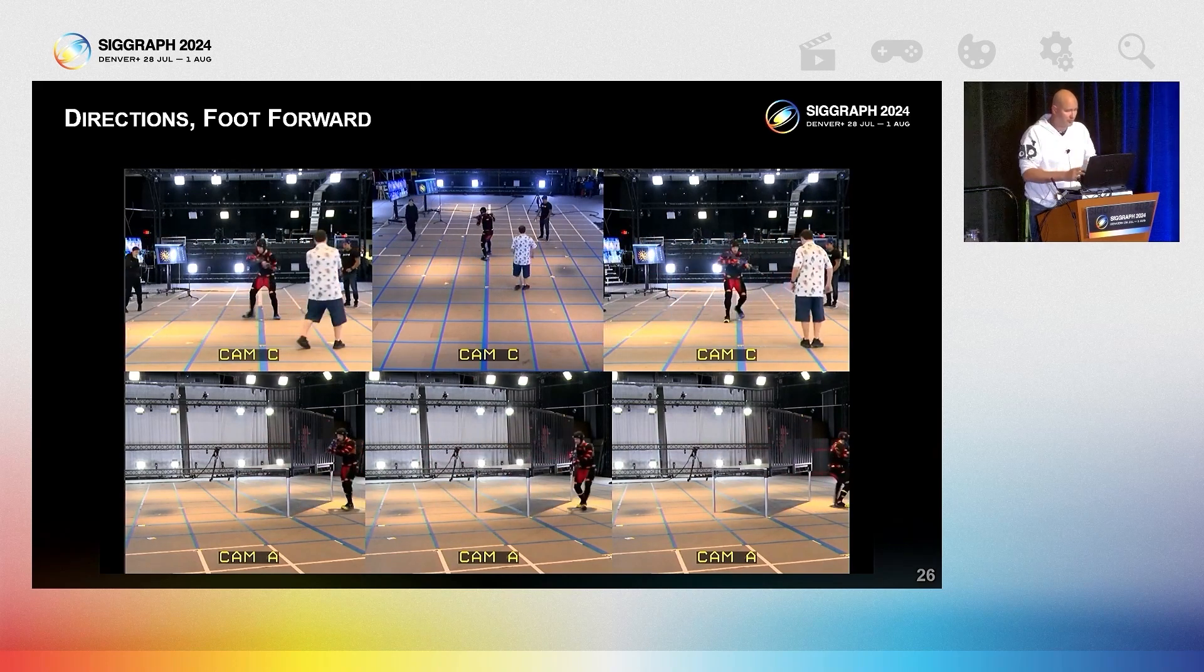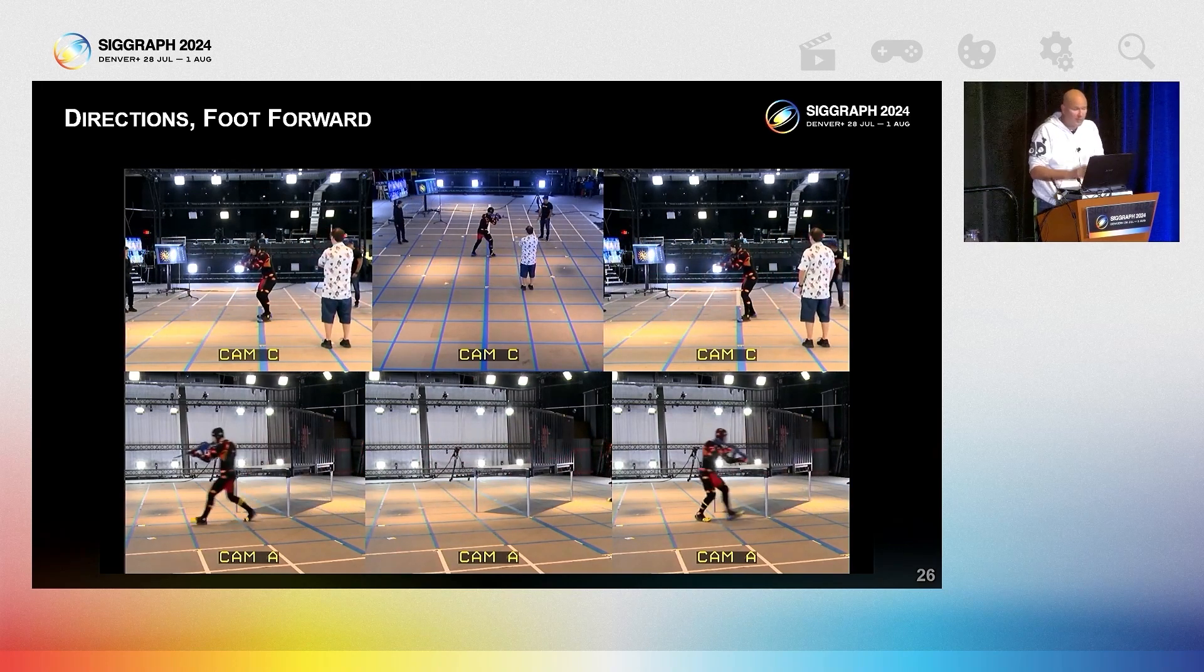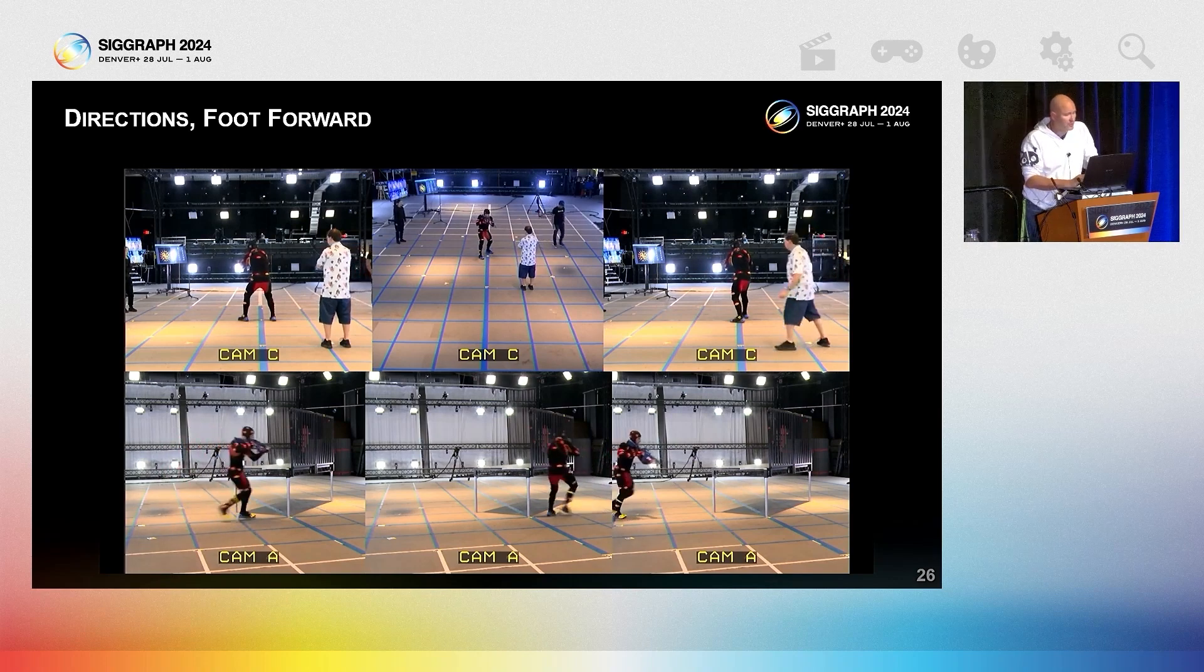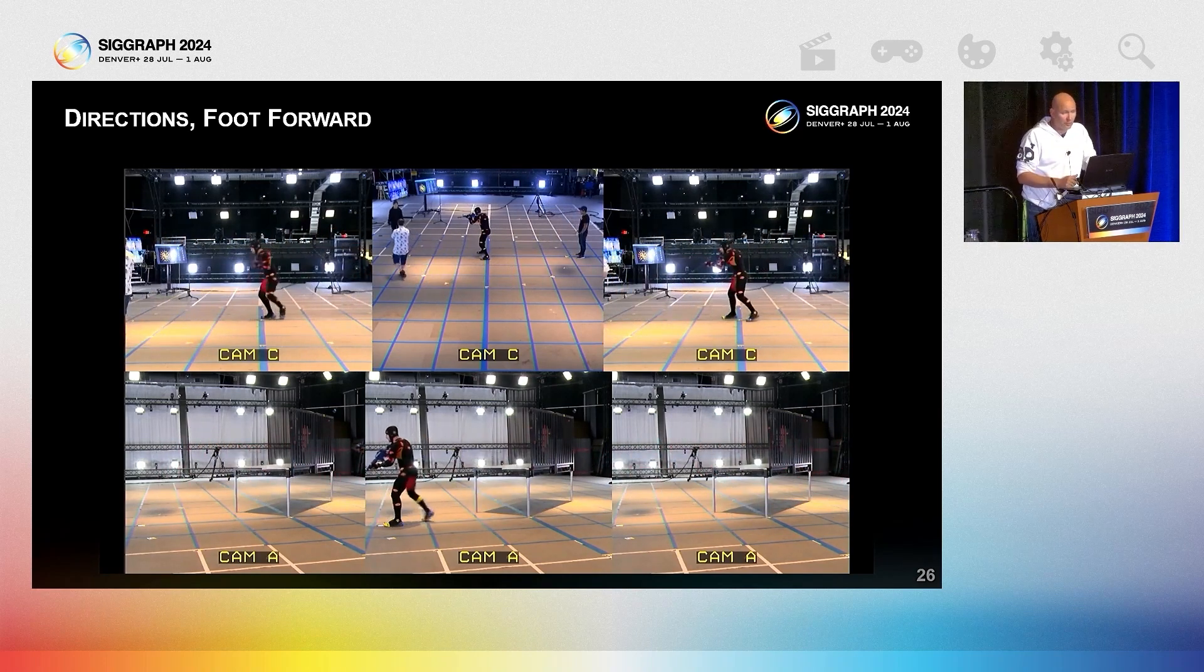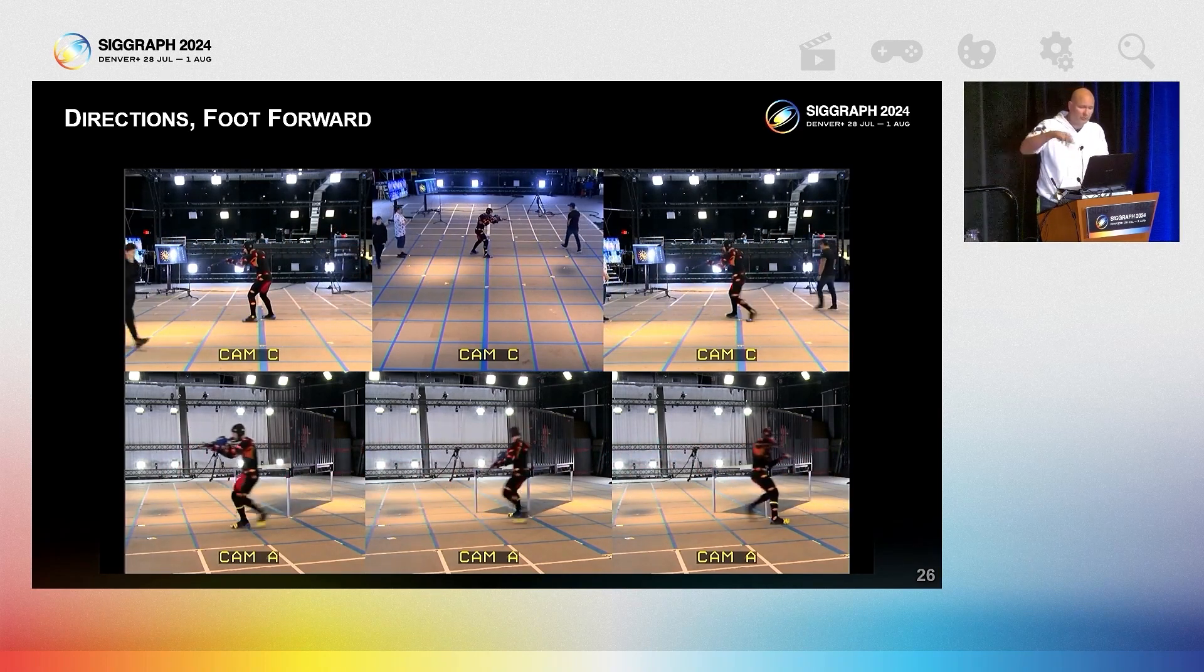And finally, for asymmetrical captures, we have actor complete each segment with left or right foot forward, or alternate. If capturing for state machines, you might choose a target pose to achieve at each corner that matches your pose library. That allows you to capture all degree turns in one go.